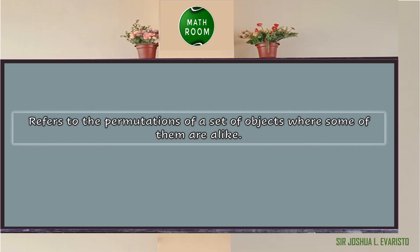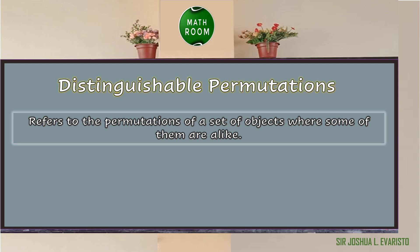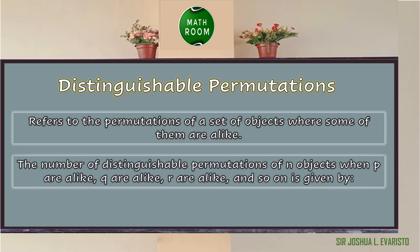The last kind of permutation refers to permutations of a set of objects where some of them are alike. In this case we use the formula for distinguishable permutations. The number of distinguishable permutations of n objects, when p are alike, q are alike, r are alike, and so on, is given by: P = n! / (p! × q! × r! × ...).